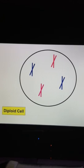Here we have a cell at the beginning of meiosis. This is a diploid cell where our number of chromosomes is equal to 4. We're starting with 4 chromosomes, but we need to end up with just 2 in each cell. We need to cut that number in half.